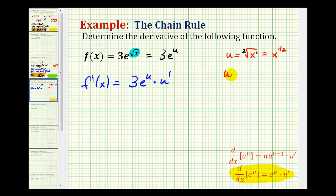So u prime would be one-half times x to the one-half minus one. Let's go ahead and simplify this. So we have one-half x to the negative one-half, which would be equal to one over two times x to the one-half, or the square root of x.